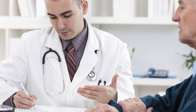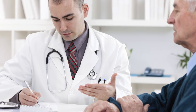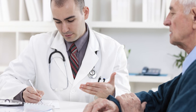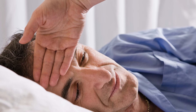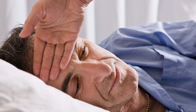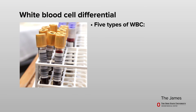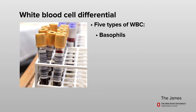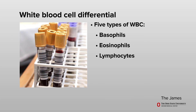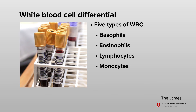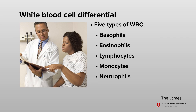Your doctor may order a white blood cell count differential. A differential gives more information about the types of white blood cells in your body. This is important because each kind of white blood cell has a different job that helps your body fight infection. There are five types of white blood cells: basophils, eosinophils, lymphocytes, monocytes, and neutrophils.